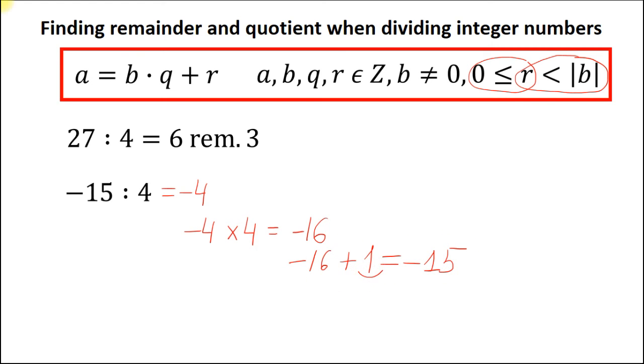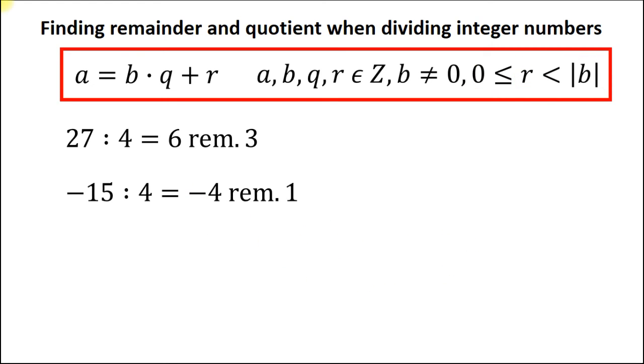Let's take a look at the third example problem with dividing a positive integer number by a negative one. This is a quite similar situation we've already seen in the previous example problem. Somebody can tell me that the quotient should be equal to minus 3.